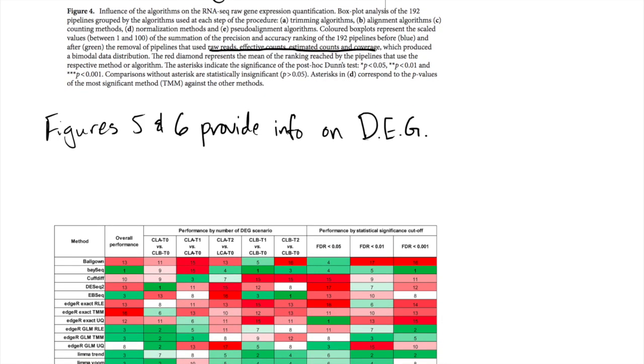Figures five and six within the paper provide information on differentially expressed genes. So for example, for all of the different techniques that they utilized, what are the number of differentially expressed genes at different FDR cutoffs. So very typical cutoffs, less than 0.05, less than 0.01, less than 0.001. And then another one, they looked at statistics such as Matthew's correlation coefficient, accuracy, area under the ROC curve, positive predictive value, negative predictive value, true positive rate, and true negative rate.